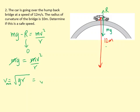So let's figure that out. That's 9.81 times 10, square root. And that gives us 9.9 meters per second.